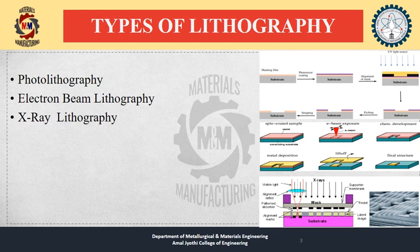If we are using chemicals, it will be one type of lithography, and if we are using plasma, it will be another type. Lithography is mainly classified into three types: photolithography, electron beam lithography, and X-ray lithography. Photolithography is also called optical lithography. If the electromagnetic radiation used is a UV light source, then it is called photolithography. In electron beam lithography, plasma is used, and in X-ray lithography, X-rays are used.